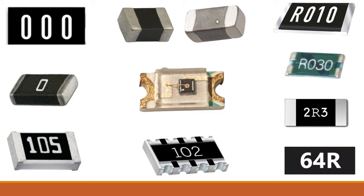This is a thermistor resistor. This kind of resistor depends on temperature — its resistance changes depending on temperature. Over here, this is a photo resistor. Its resistance changes in accordance with the level of light.